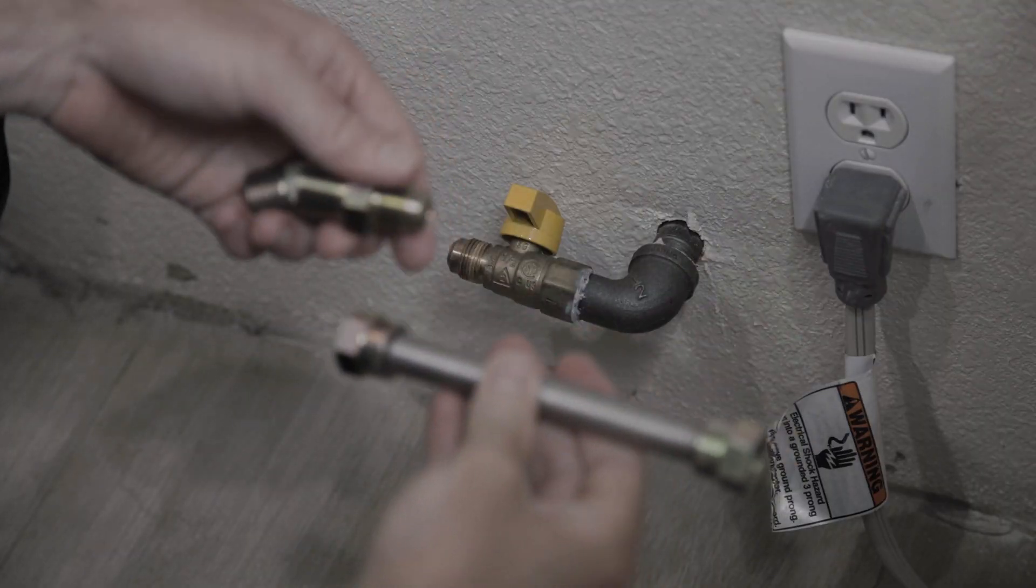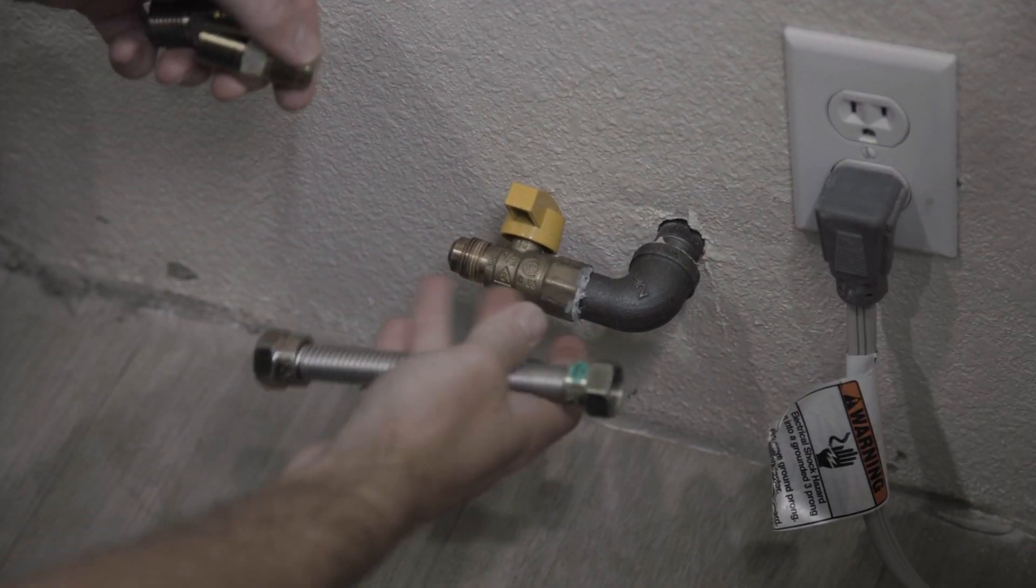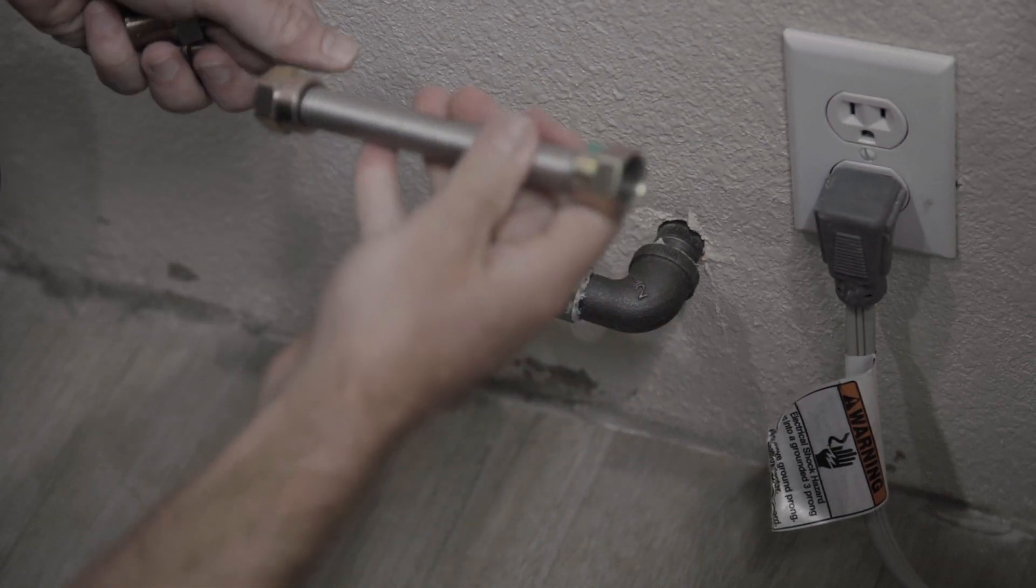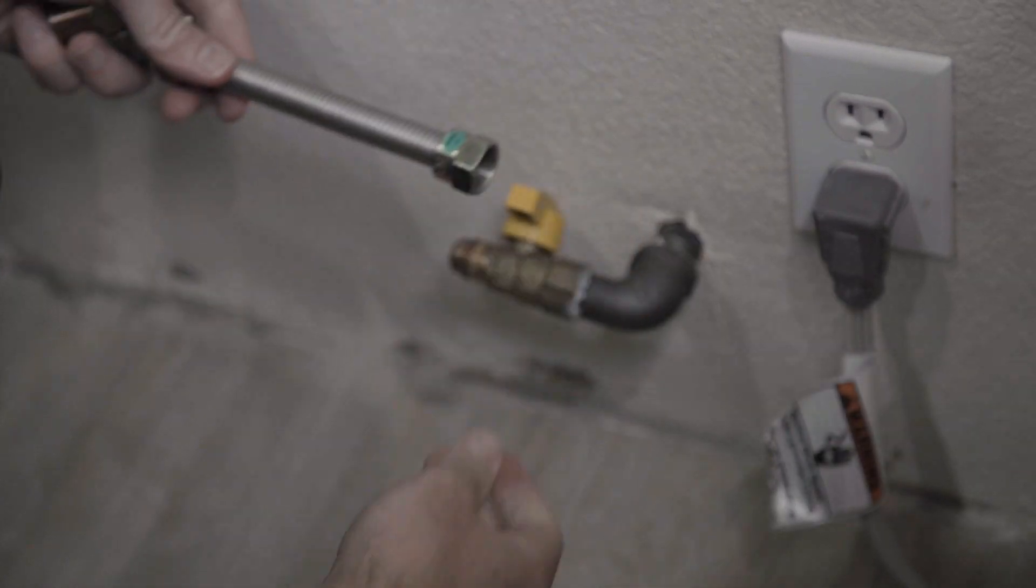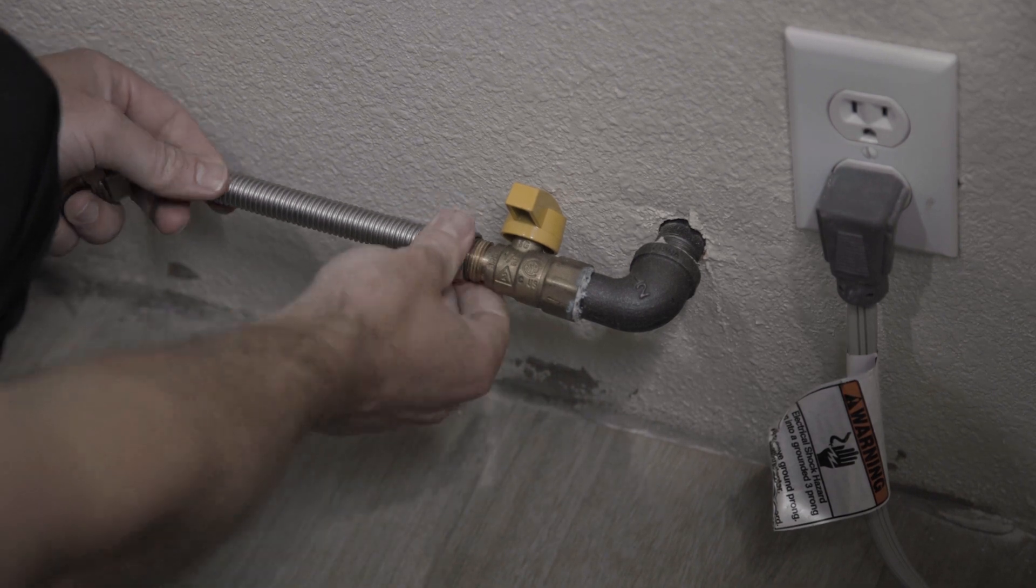Next, you're going to take your fittings for this half-inch gas line. You're actually going to take the hose and connect it directly to the fitting.